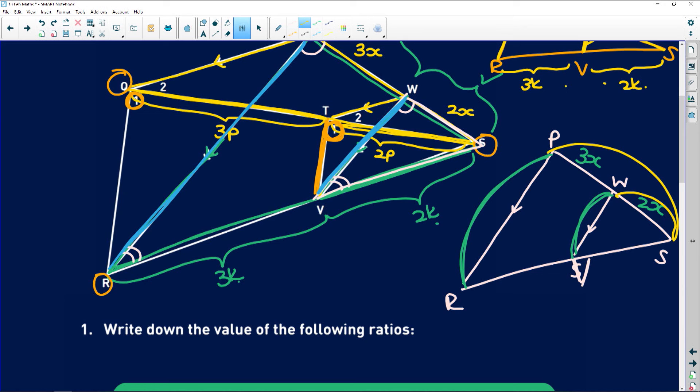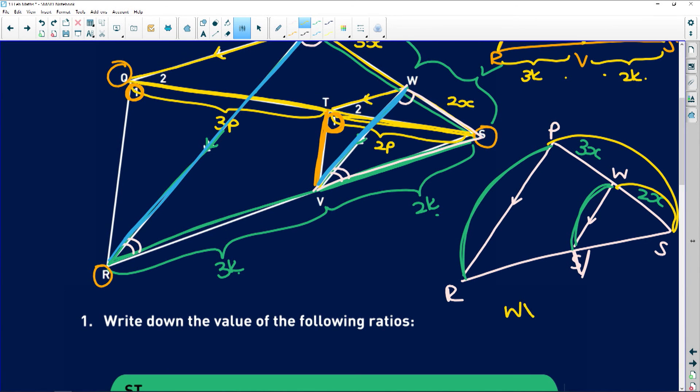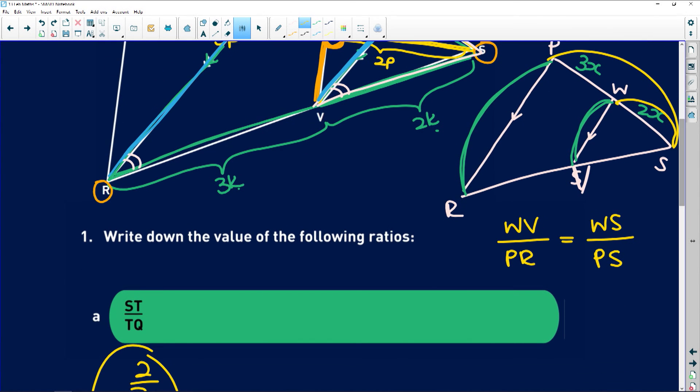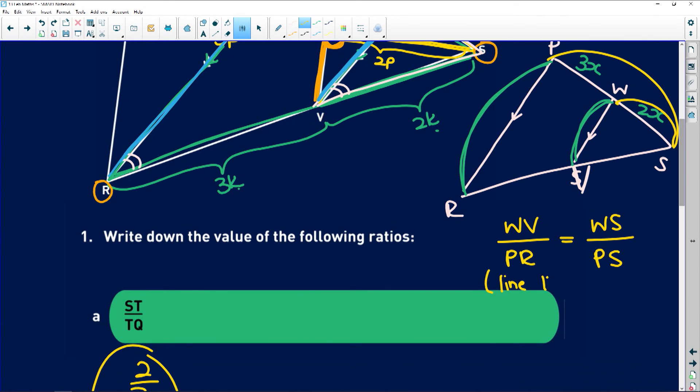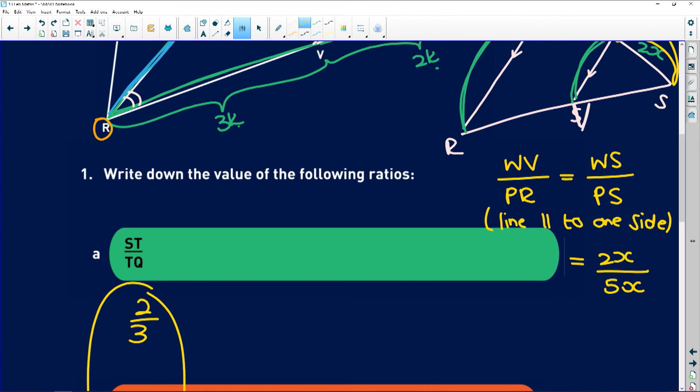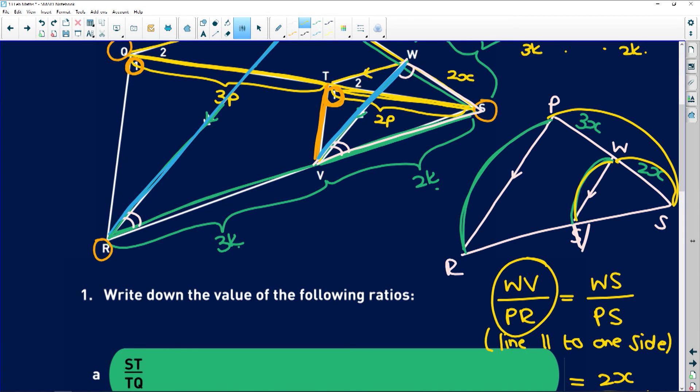So I'm going to do the proof here. WV to PR is equal to WS to PS. And the reason is line parallel to one side. Which means that it is equal to WS we said was 2X. And PS will be the sum of those two sides which is 5X. So that means that this whole ratio that we need to prove here is equal to 2 over 5. Make sure you understand what they're asking you guys. Short side, long side. Short side, long side.